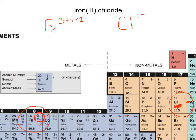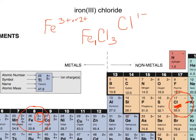So we write down the symbols again: Fe and Cl. Then we take the 3 — because we're using the 3 from Roman numeral III — and bring it down as a subscript for Cl. Then we take the 1 from chlorine's charge and bring it down for Fe. In chemical formulas we do not write the 1s, it's just assumed that if there's no number there it is a 1. So our final formula is FeCl₃.